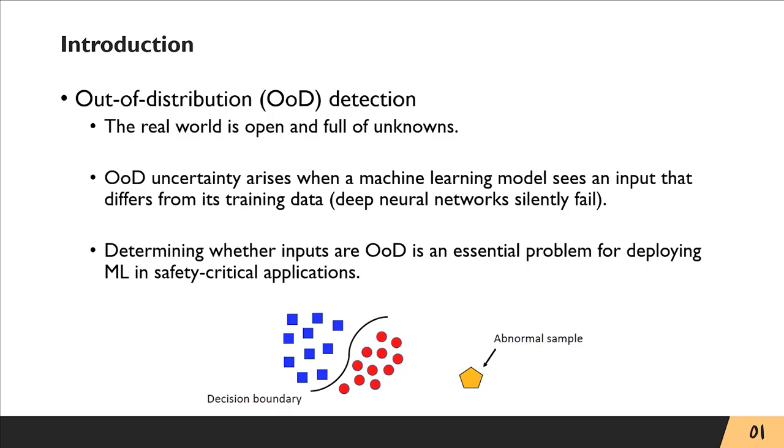Let's start with the out-of-distribution detection problem. The real world is open and full of unknowns. OoD uncertainty arises when a machine learning model sees an input that differs from its training data.